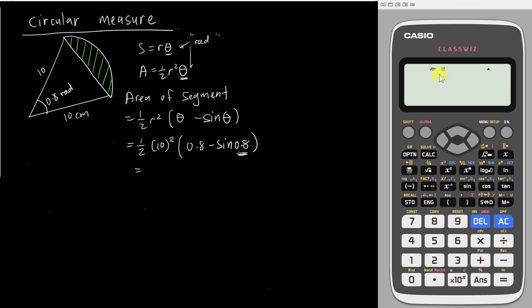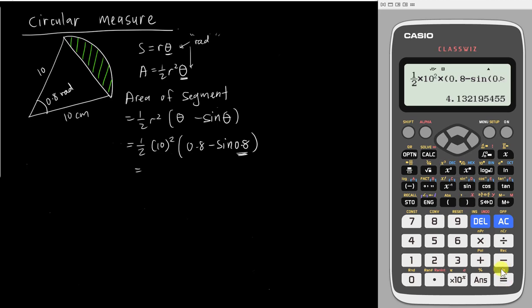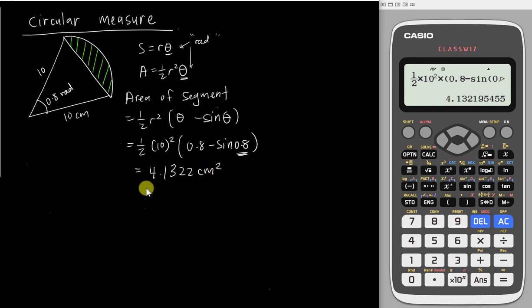The 'D' letter on top now changes to 'RAD', standing for radian. Then you insert all the values: ½ × 10² × (0.8 − sin(0.8)) and close the bracket. You can easily get the answer for the area of shaded region, which is about 4.1322 cm².